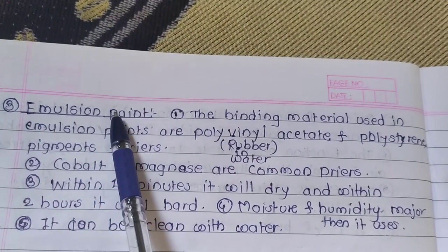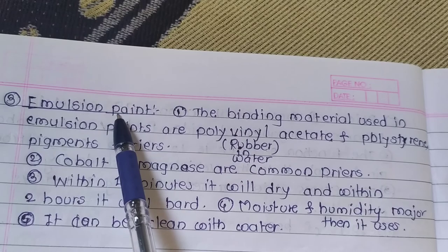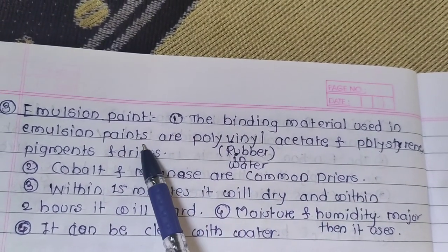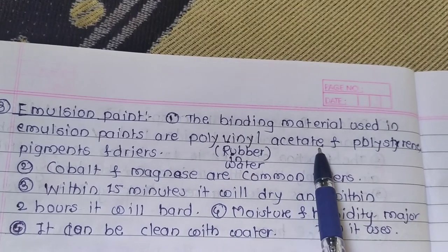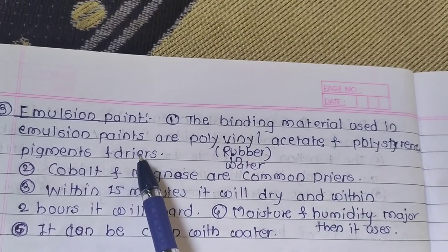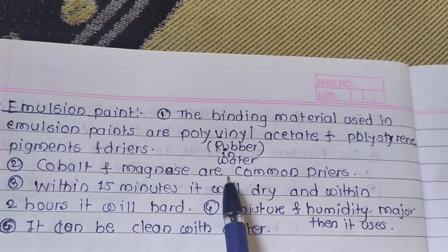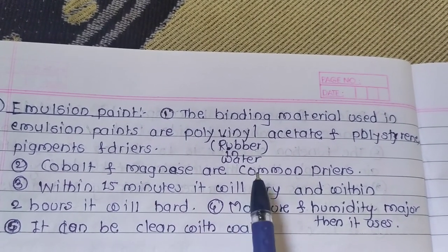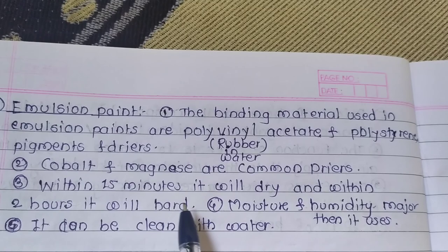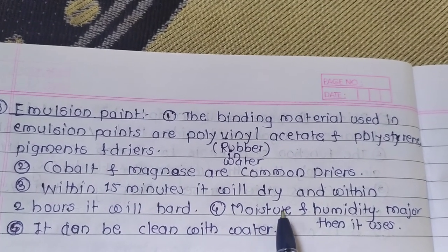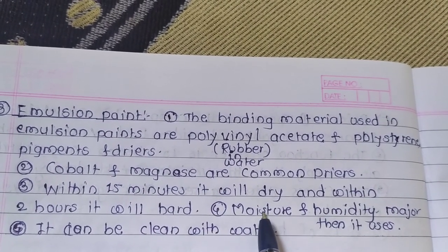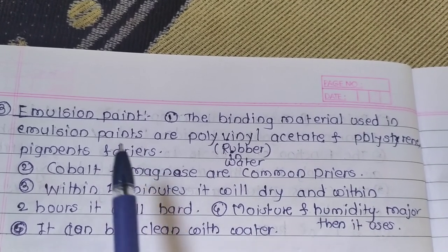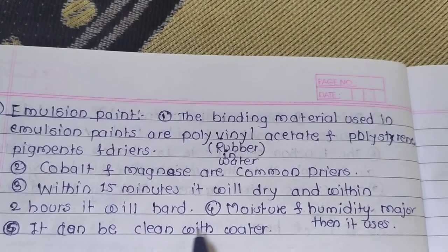Emulsion paint means rubber-in-water emulsion. The binding materials used in emulsion paint are polyvinyl acetate and polystyrene. Pigments and dryers such as cobalt and manganese are common primers. Within 15 minutes it will dry, and within 2 hours it will set. In areas where moisture and humidity is more, emulsion paint is used. It can be cleaned with water.